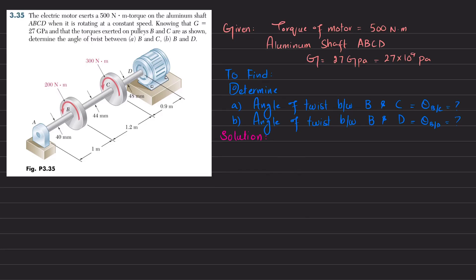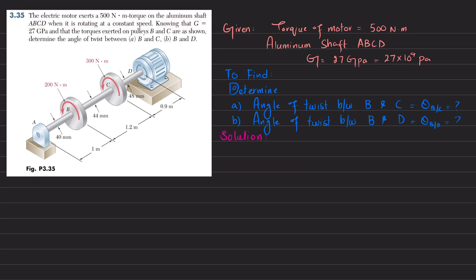Welcome back. Problem 3.35, taken from Mechanics of Materials by Beer & Johnston, 6th edition. The statement is: an electric motor exerts a 500 Newton-meter torque on aluminum shaft ABCD when it is rotating at a constant speed. Knowing that G is 27 GPa and the torques exerted on pulleys B and C are shown, determine the angle of twist between B and C, and between B and D.